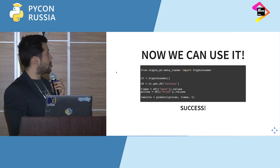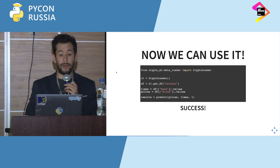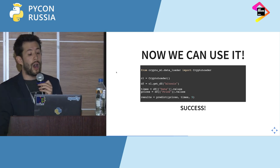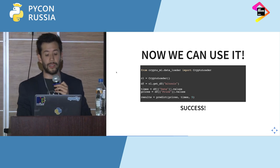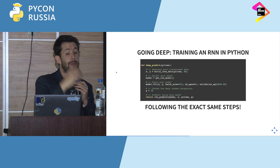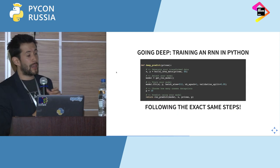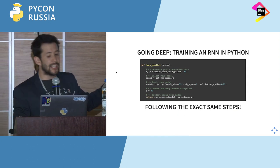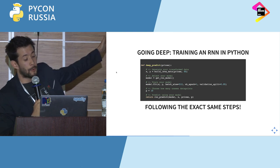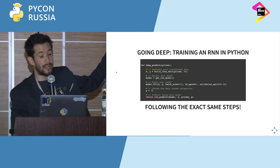When we use it with the crypto loader, we're able to predict the price. Now going deep with our LSTM — it's basically the same process. We generate the transformed data. In this case for training we're using a sliding window of 50: we train the neural network by giving it 50 data points and trying to predict the next one, then sliding the window and predicting the next one, and so on.